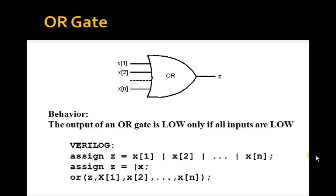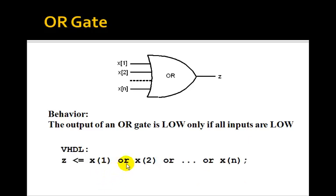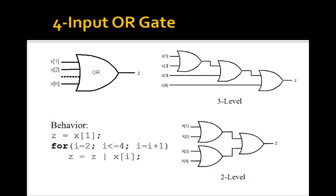Let's look at a multiple-input OR gate. The output of a multiple-input OR gate is low only if all inputs are low; if any input is 1, the output is 1. In Verilog, we use the assignment statement with the OR symbol. The reduction operator — OR x, where x is an array — can represent this concisely. We also have the gate instantiation statement for OR. In VHDL, you spell out the word OR and use curved brackets for array indexes. You can also use the for loop to produce a multi-level OR gate the same way we did for the AND gate.